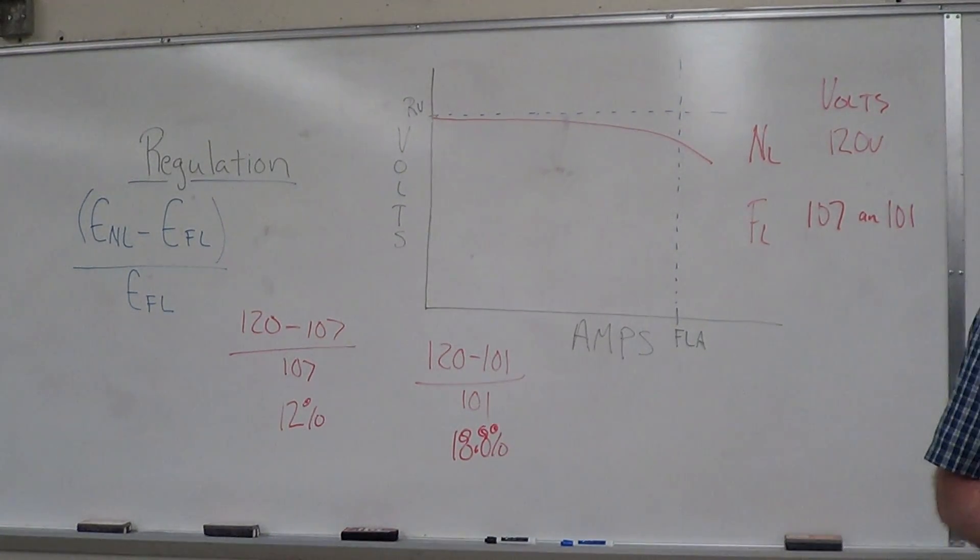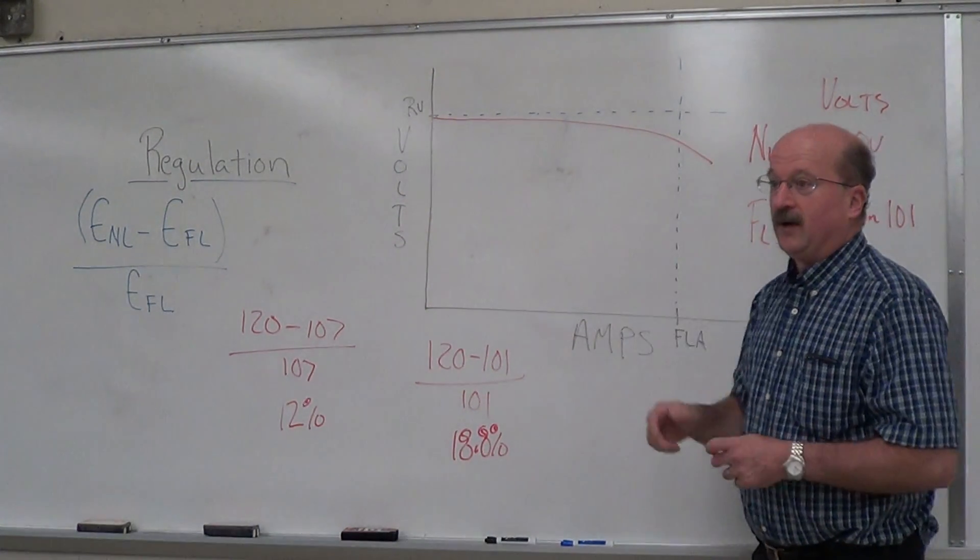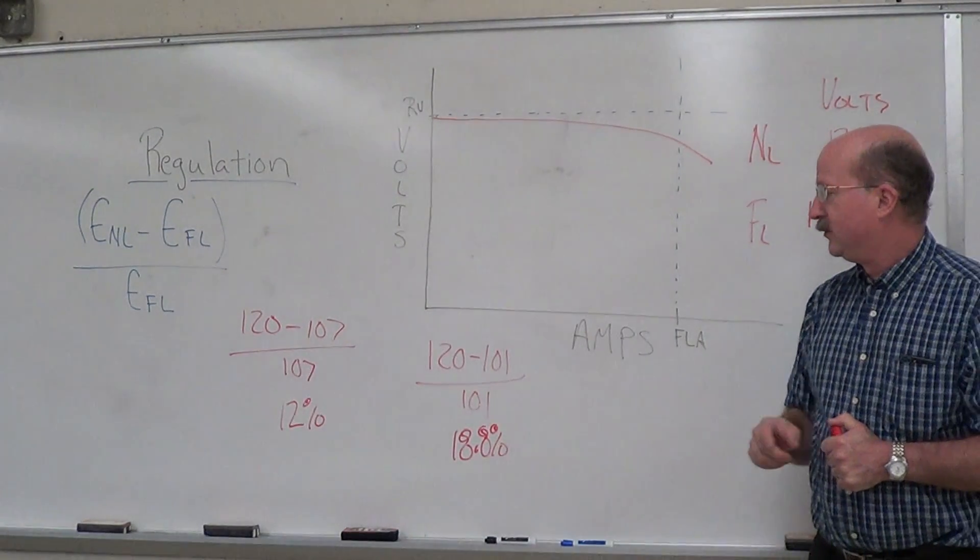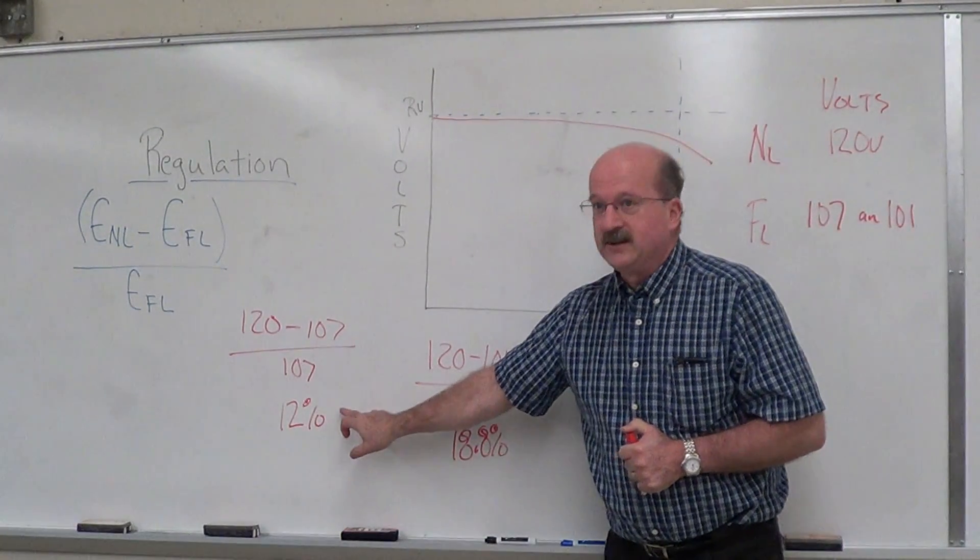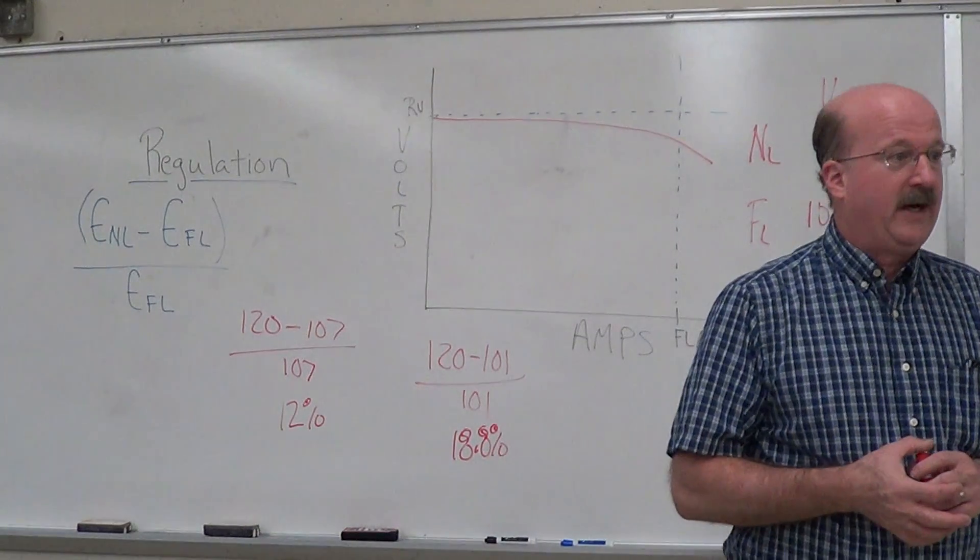Which one is better? 12%. It's only a 12% variance, right? From no load to full load. You want to try and work - the lower this number, the better regulation you have.